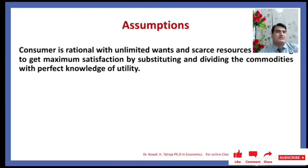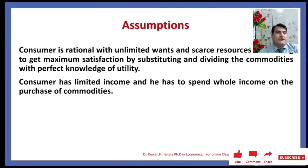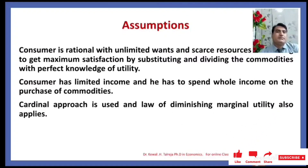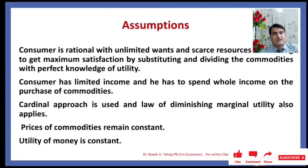What are the assumptions on the basis of which this law can function? The consumer is rational with unlimited wants and limited or scarce resources, and the consumer wants to get maximum satisfaction by substituting and dividing commodities with perfect knowledge of utility. The consumer has limited income and has to spend the whole income on the purchase of commodities. The cardinal approach is used, and the Law of Diminishing Marginal Utility also applies. Price of commodities remains constant and utility of money is constant.